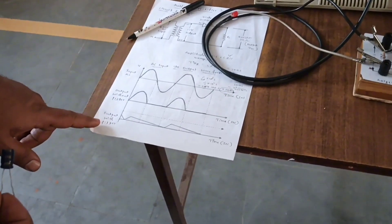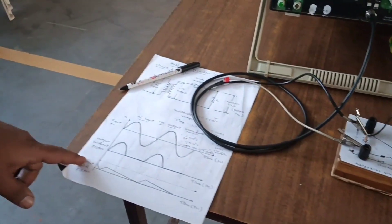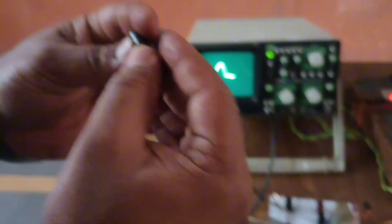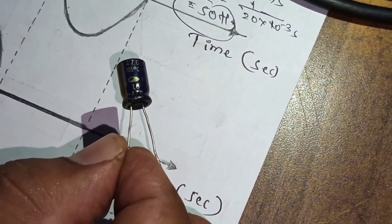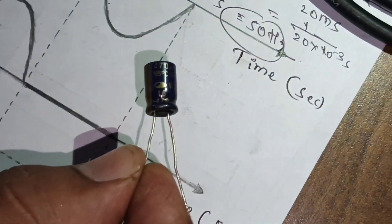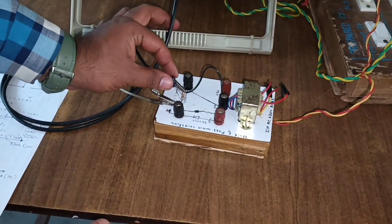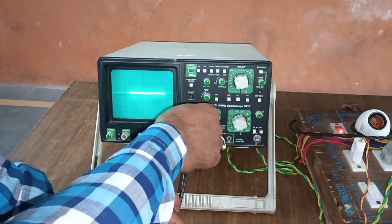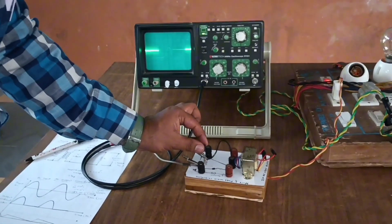When we connect one capacitor as a filter, the output waveform comes closer to a smooth DC level. A 470 microfarad capacitor is connected across the load resistor RL — positive lead to positive and negative lead to negative. You can see the waveform variation immediately; the output waveform changes to a smoother shape with the filter connected.